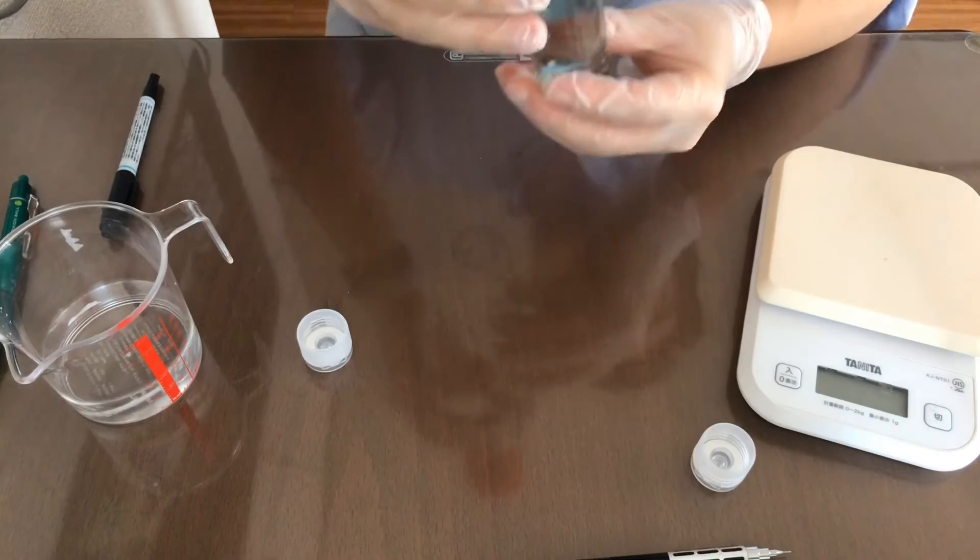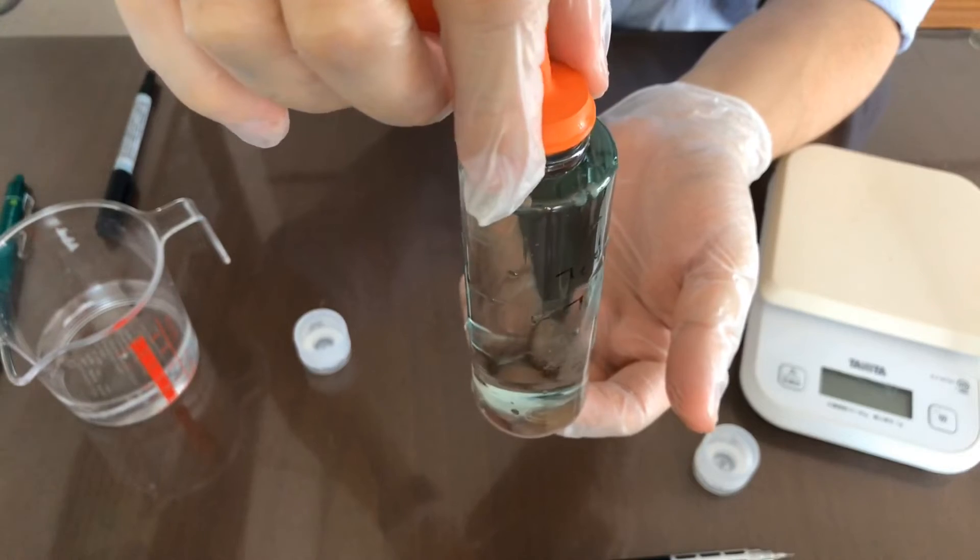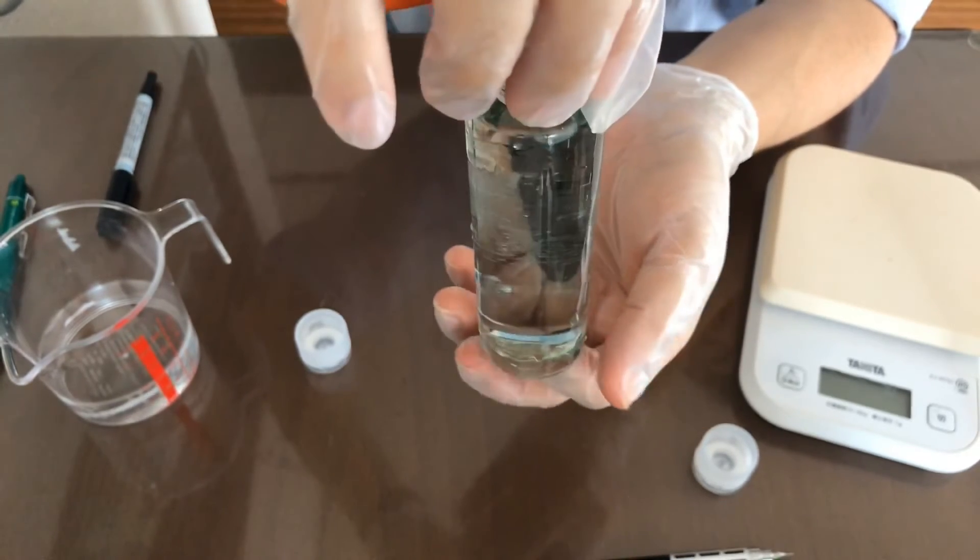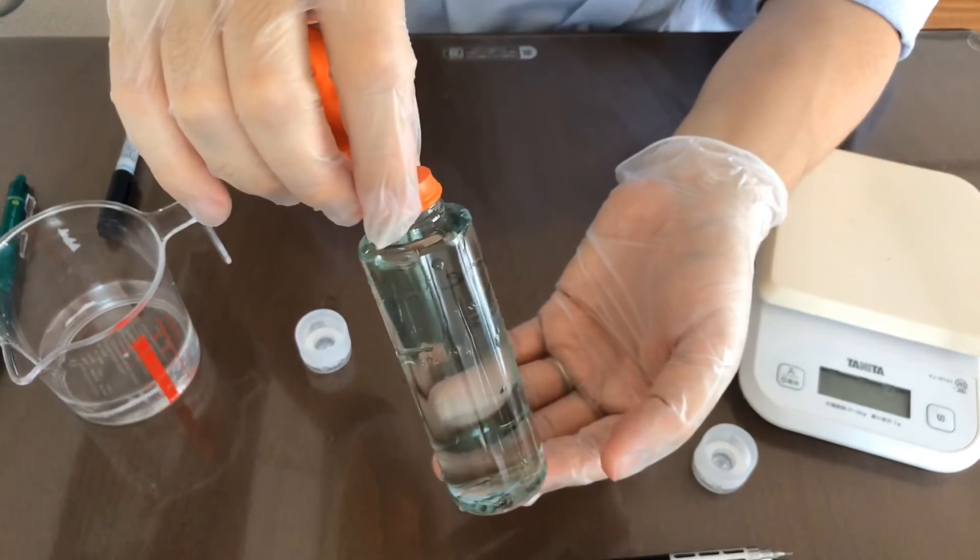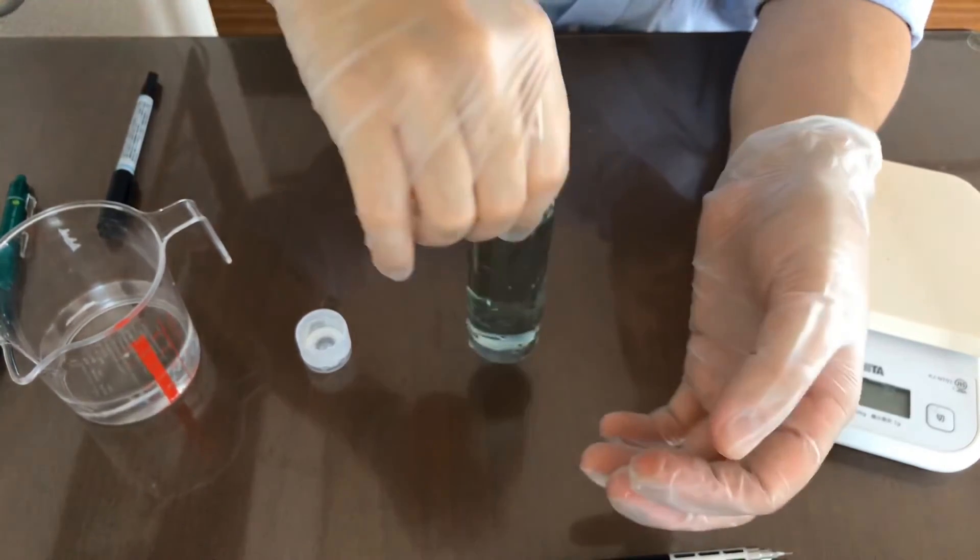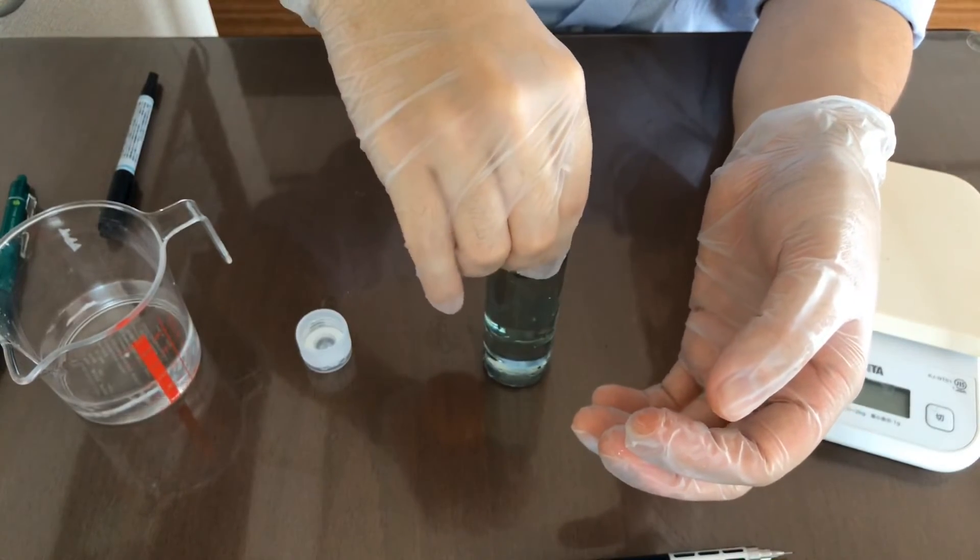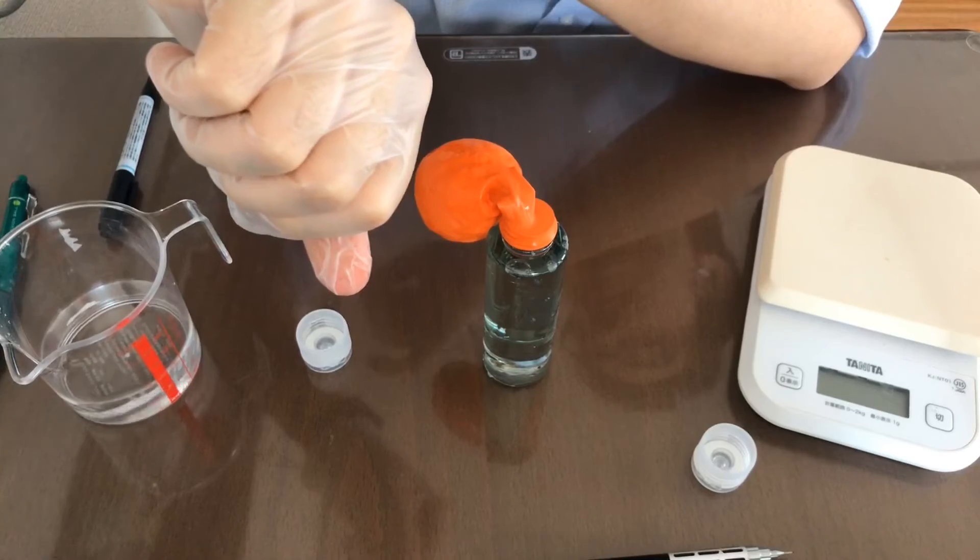So now we wait and see. Let's look at our initial color, let's look at the initial color of the bottle, and let's be checking in every five minutes. Let's set a timer, five minutes.